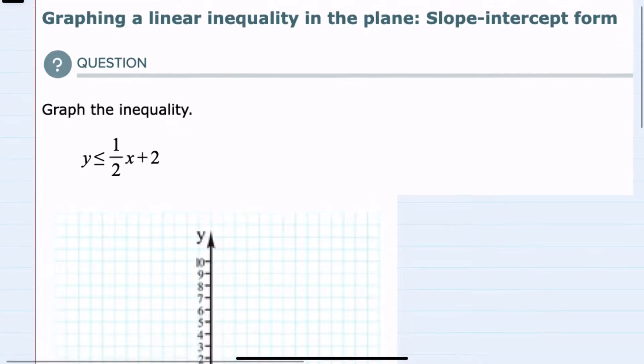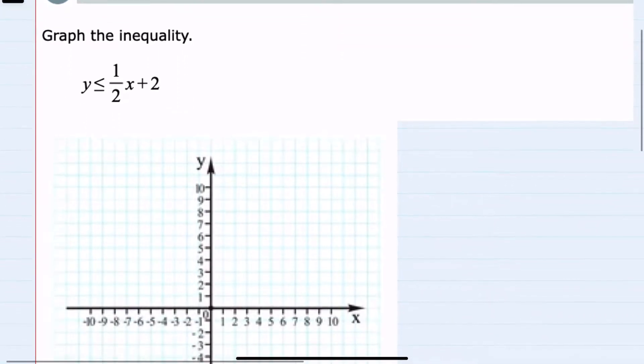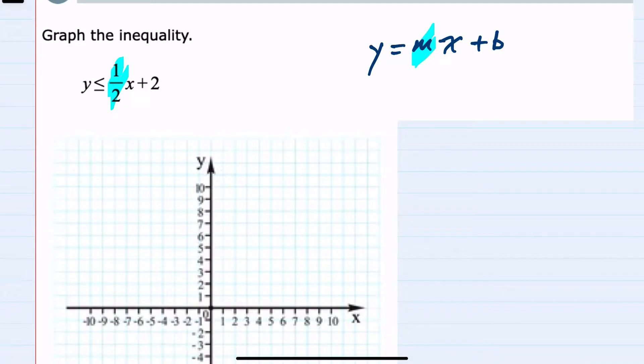We can see here that our inequality is in slope-intercept form, meaning that we have the y isolated on the left-hand side. We have a coefficient in front of the x, which in slope-intercept form means that's our slope. Our slope here is one-half, and we have a number being added or subtracted. That would be our b term, which is our intercept, and here our intercept is a positive two.